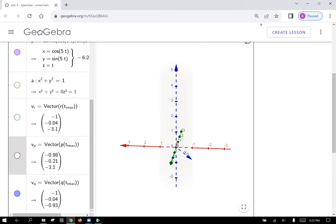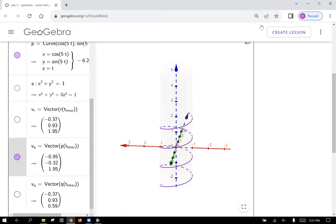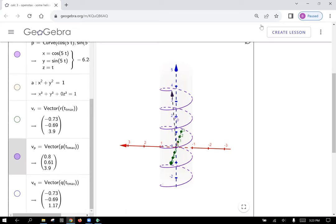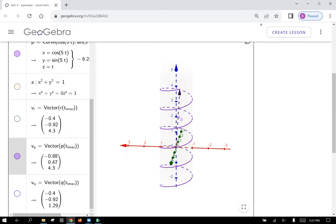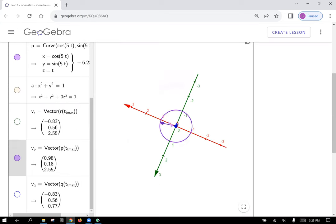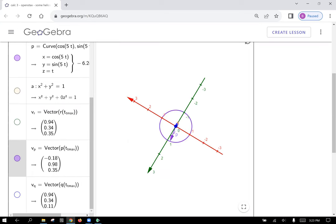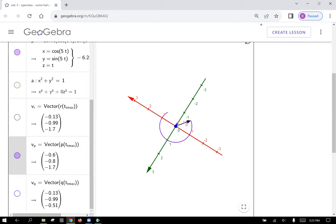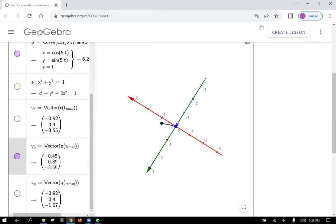And the third curve we have is this one, p, which is wrapping even faster. All of these curves are wrapping around this cylinder, so they're called a helix. And if you view them from on top, they're just going around that unit circle. Why is that?